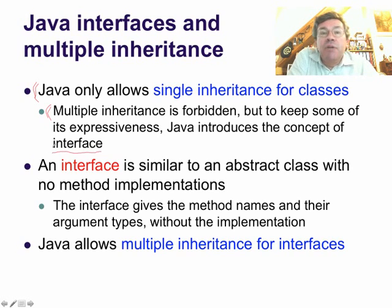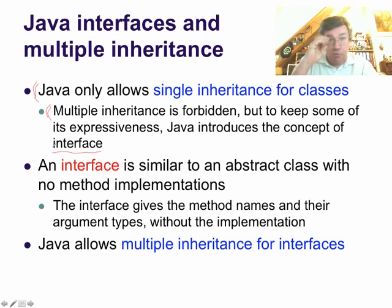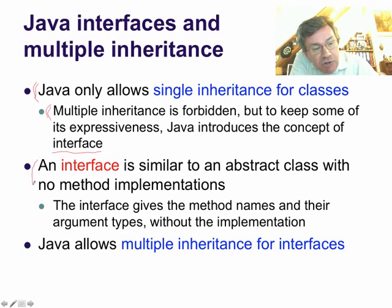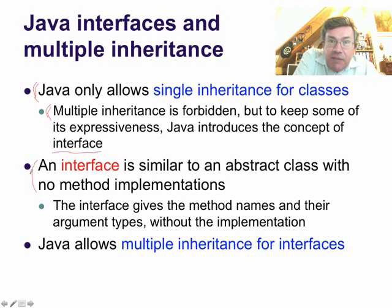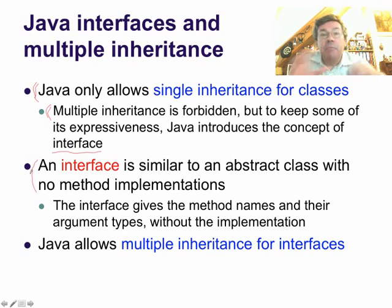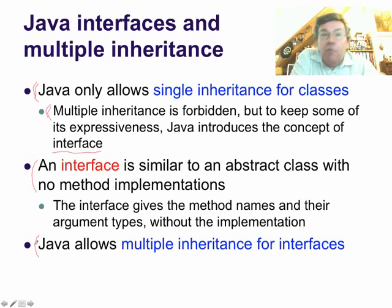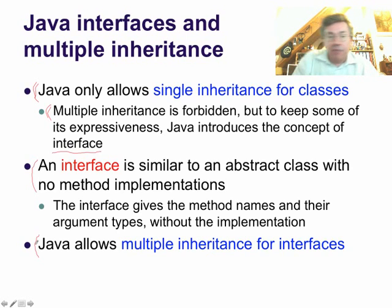This is a reuse of the word interface to mean something very specific in terms of object-oriented programming in Java. So in Java, an interface is similar to an abstract class with no method implementations. In fact, it only has the method names and their argument types and no implementation — it's like an empty shell. And Java says: we do allow multiple inheritance for interfaces.